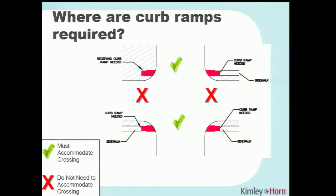This diagram shows the domino effect: sidewalk on the east side triggers the need for a curb ramp, which triggers the need to accommodate the pedestrian crossing, which then triggers the receiving curb ramp on the opposite side. You can technically stop the sidewalk short to avoid triggering those requirements, but that kind of goes back to good planning judgment — is this really what we want to do to serve pedestrians in this area?